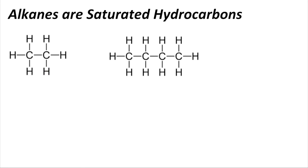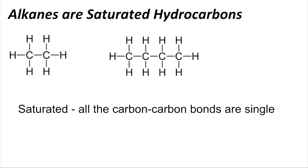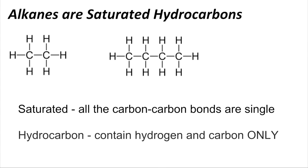Alkanes are what we call saturated hydrocarbons. We've got ethane on the left with two carbons and butane on the right with four carbons. They're called saturated because all of the carbon-carbon bonds are single, and they're called hydrocarbons because they contain hydrogen and carbon only.